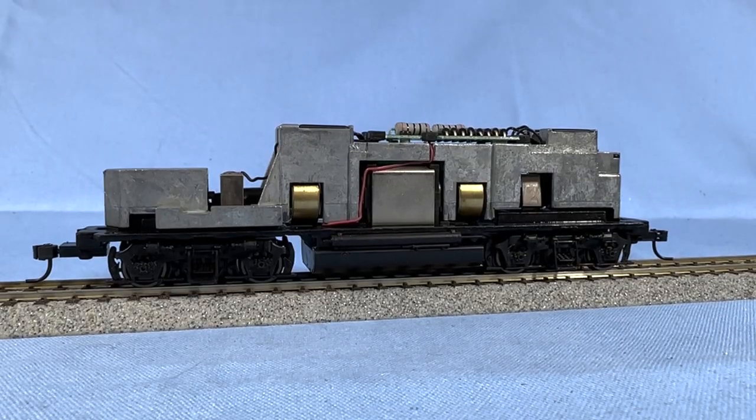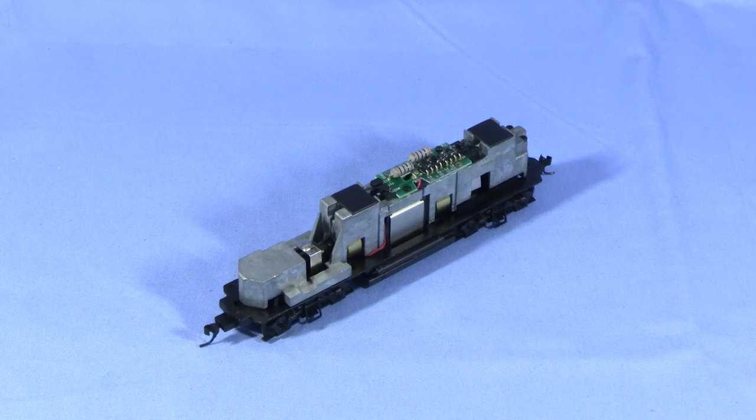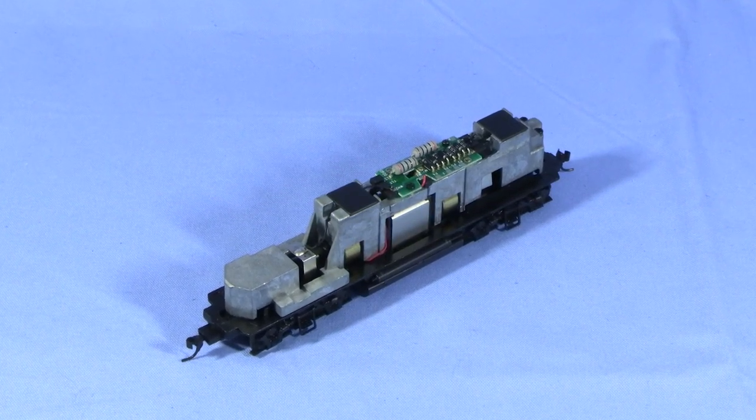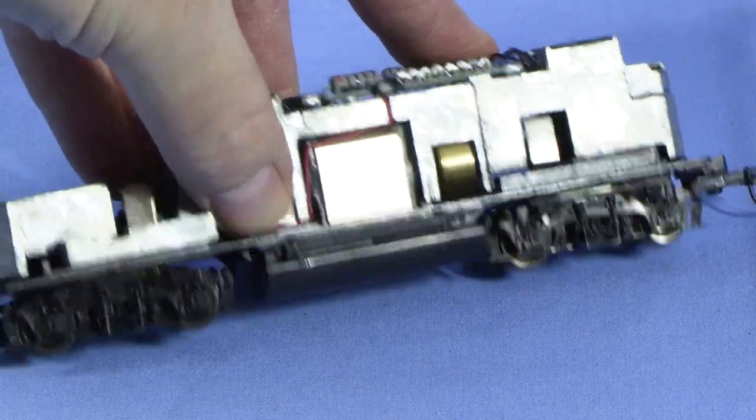This locomotive is frozen solid. When I apply power, the motor just buzzes. If you have an engine like this, don't keep giving it throttle hoping it'll work. That'll just stress and possibly damage the motor. I can't even turn the flywheels by hand. These should spin easily.